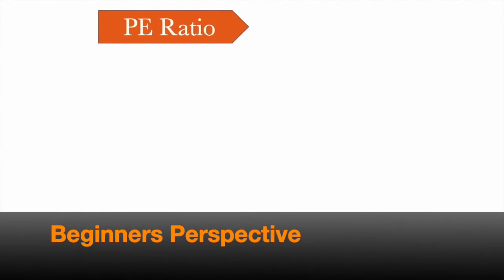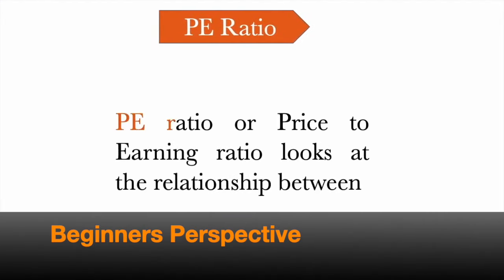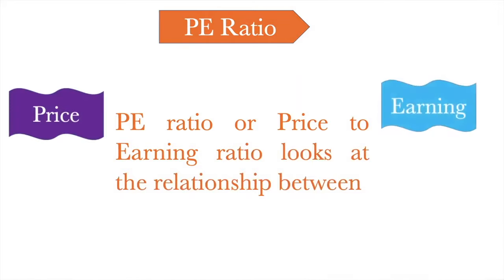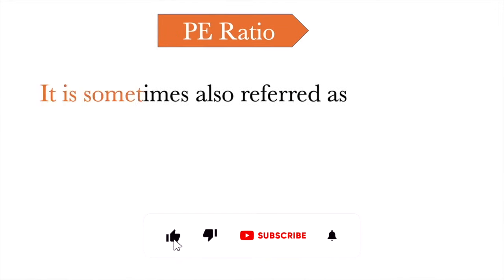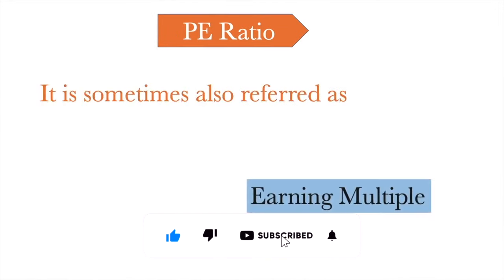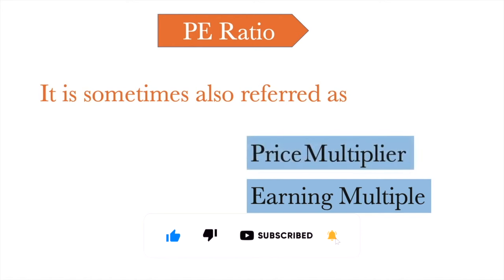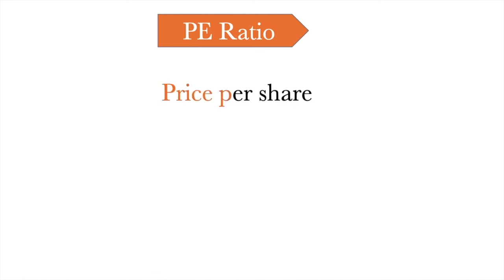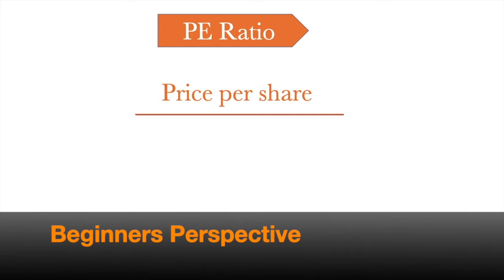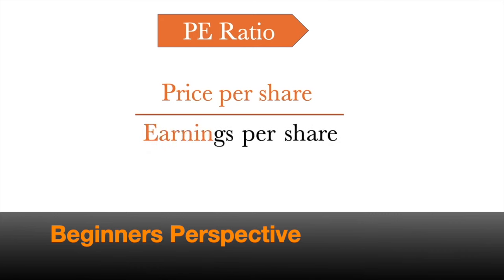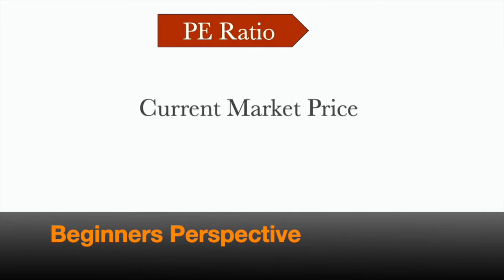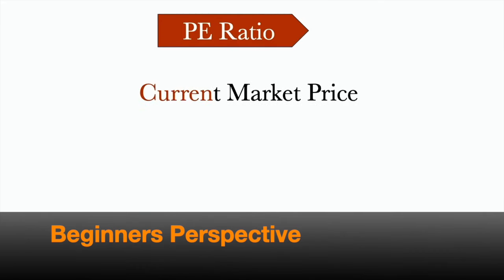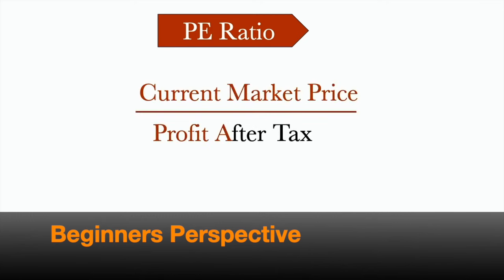Let's understand PE ratio. PE ratio, or price-to-earnings ratio, looks at the relationship between price and earnings. It is also referred to as an earnings multiplier or price multiplier. PE ratio can be calculated by dividing price per share by earnings per share. Another method is current market price divided by profit after tax.